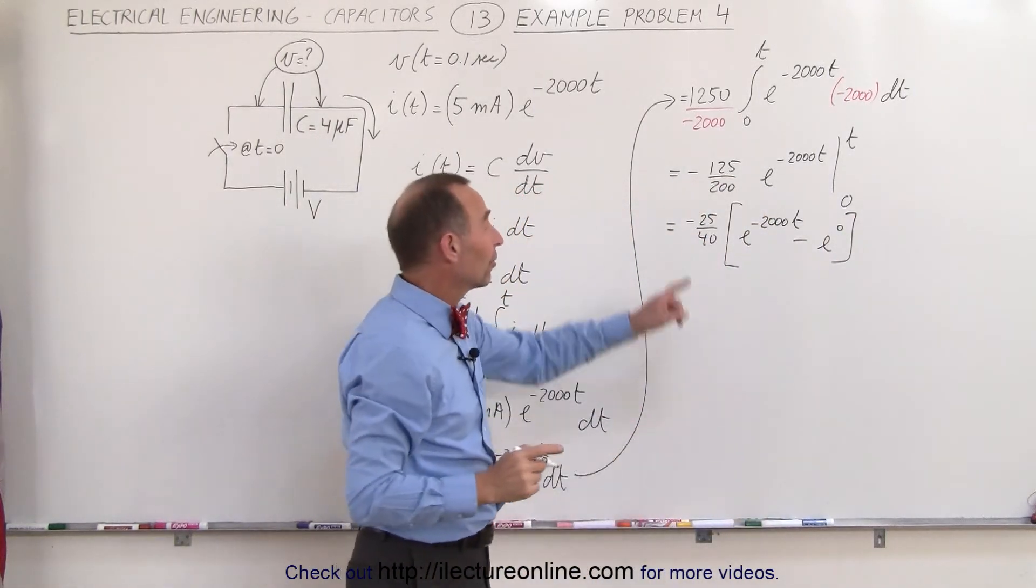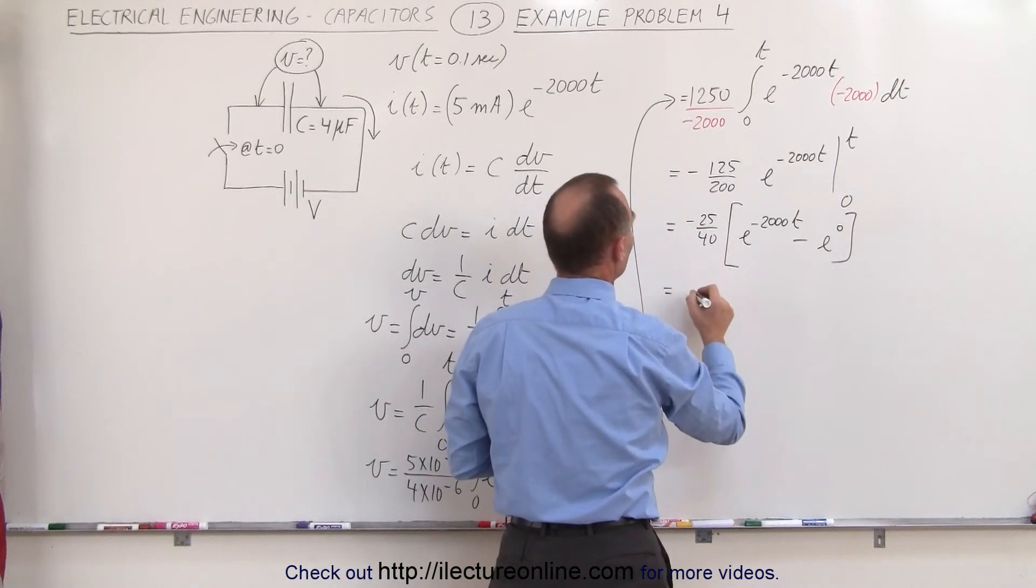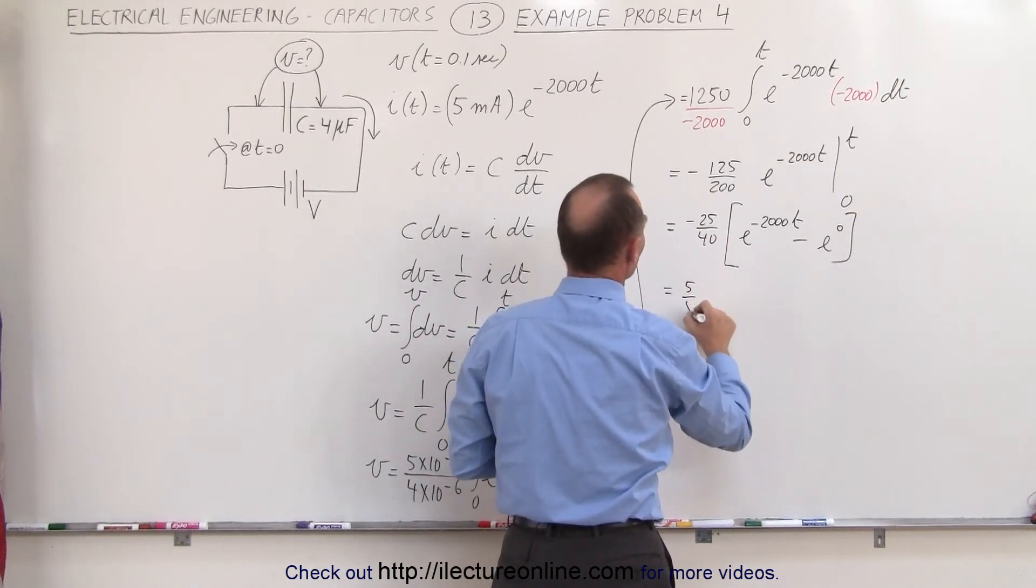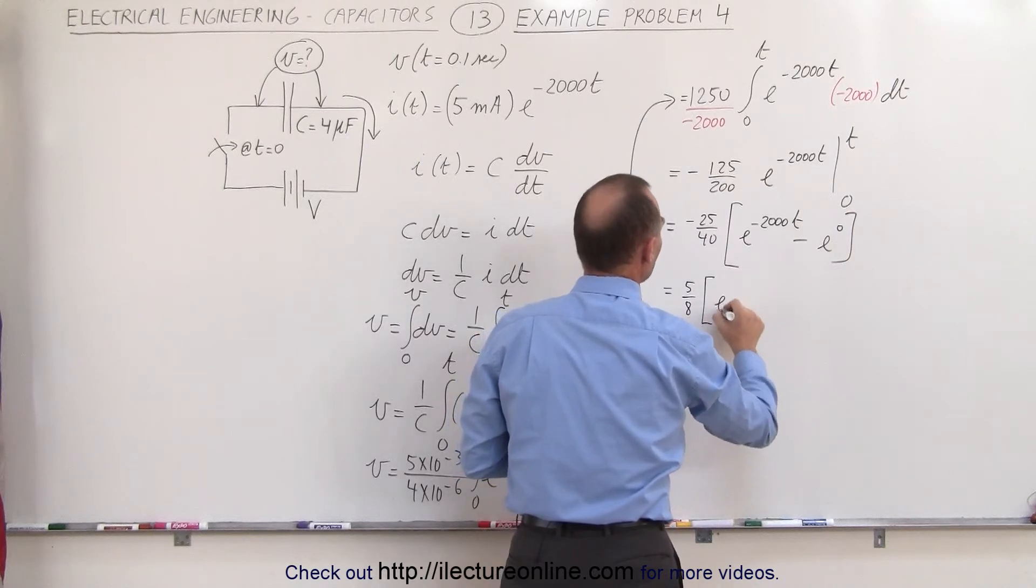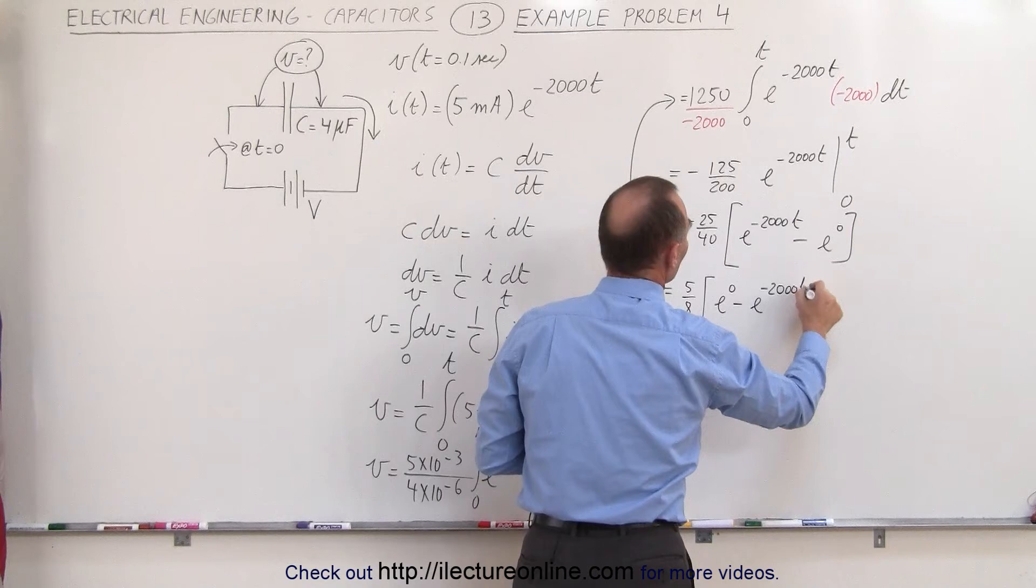Now what I can do is with this minus sign I can simply turn these two around. So this is equal to 25 divided by 40, that would be equal to 5 over 8 times e to the 0 minus e to the minus 2000 t.